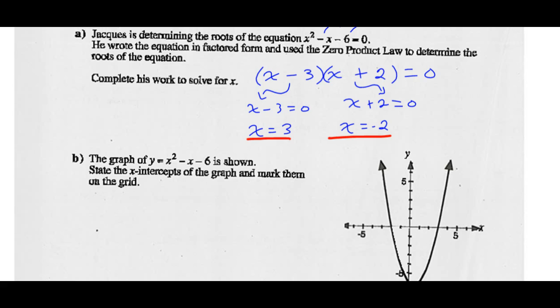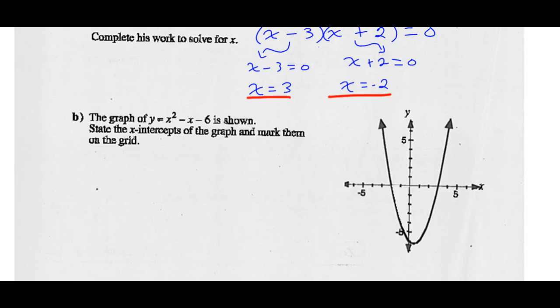The graph of y = x² - x - 6 is shown. State the x-intercepts of the graph and mark them on the grid. This graph should be labeled as y = x² - x - 6. The x-intercept is at 3 and this x-intercept is at -2.